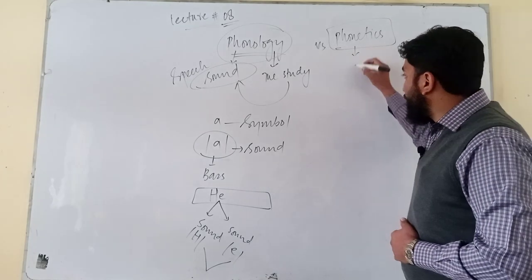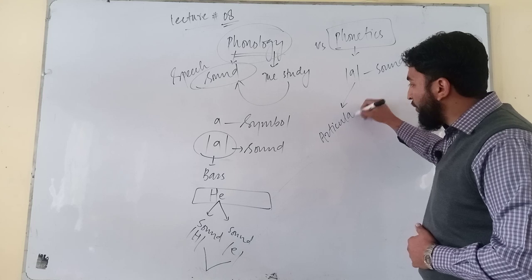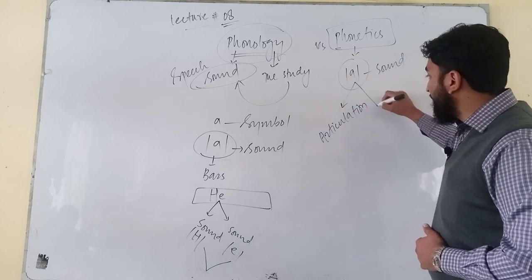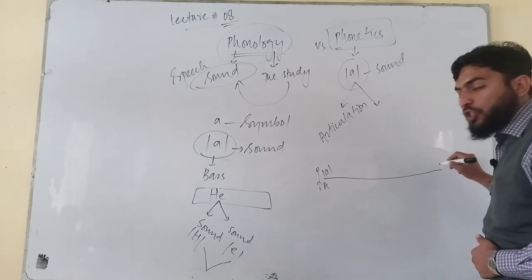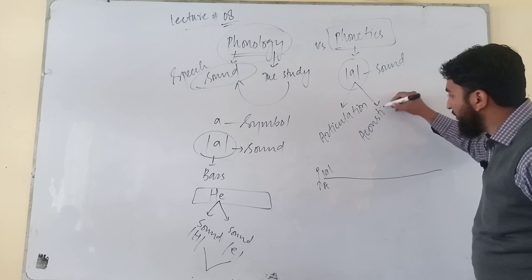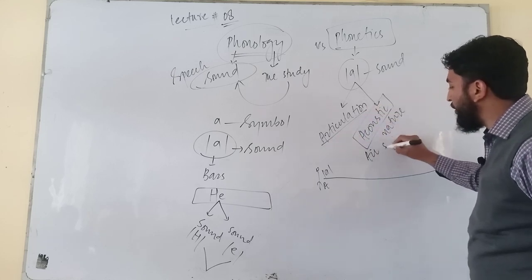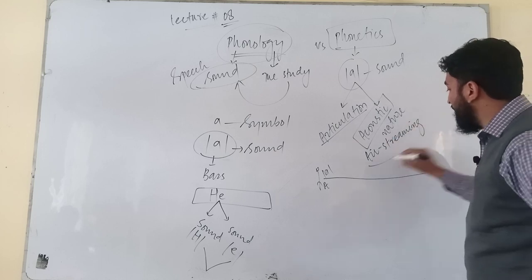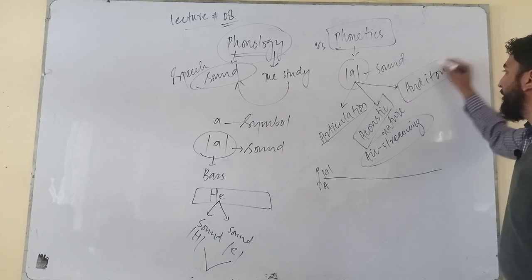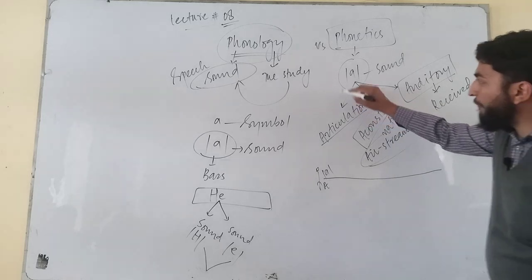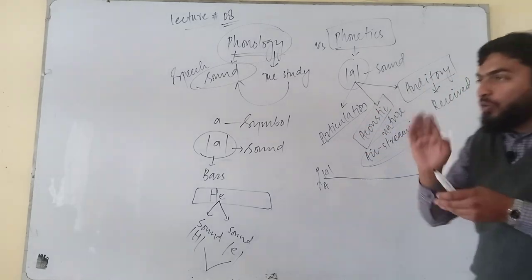In phonetics, suppose there is a single sound A. We study how this sound is articulated — the articulation of the A sound. Then we study how it travels in the airstream from the speaker. This is called the acoustic nature of the sound. So phonetics covers the articulation of a sound, its acoustic travel through the airstream, and how it is received by the listener, which is called the auditory aspect.